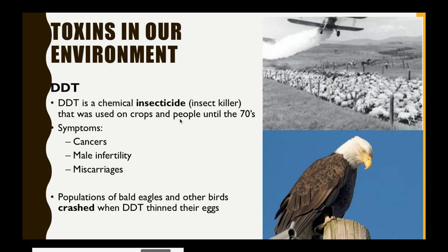Another toxin you may not be as familiar with is called DDT. DDT was a chemical insecticide, or insect killer, that was very popular up until the 1970s. We commonly used this to spray crops and even people in order to get rid of insects. You might be wondering why we would spray people with an insecticide — it was actually very effective for getting rid of lice, and you can find pictures online of people spraying one another with DDT.